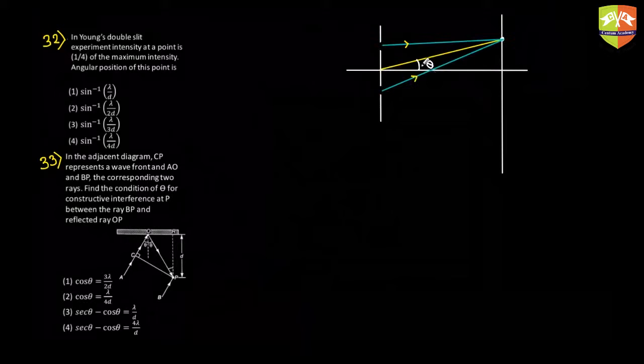Now if theta is the angular position, do you know that the path difference between these two is nothing but d sine theta, which can be approximated to d tan theta as well.